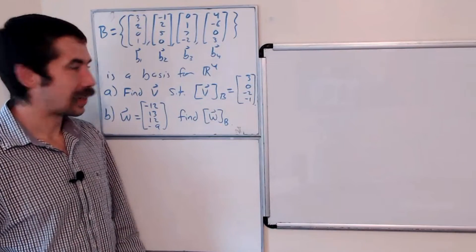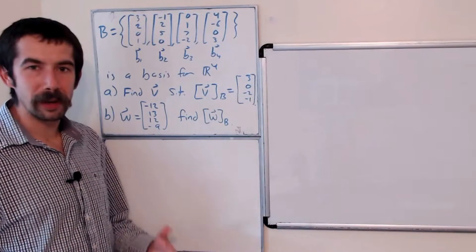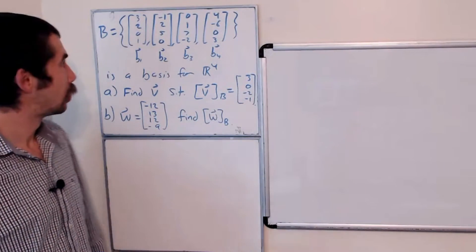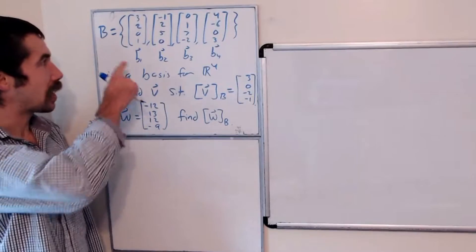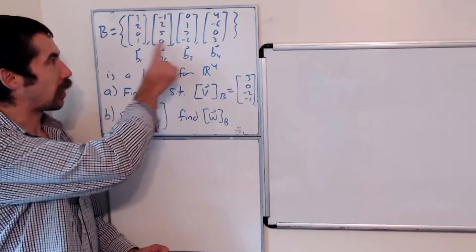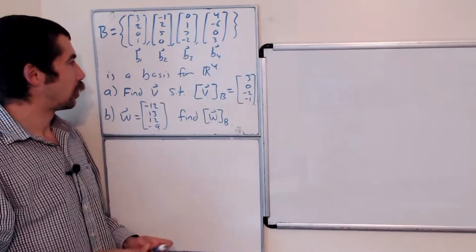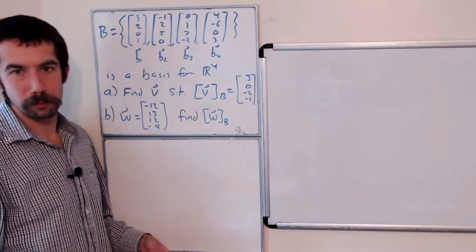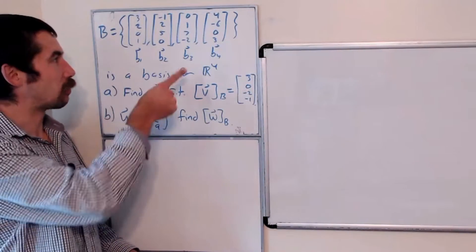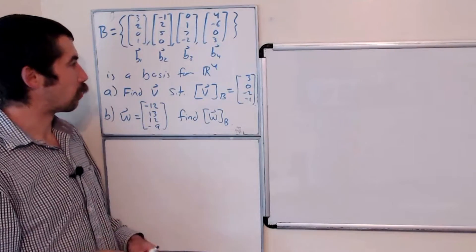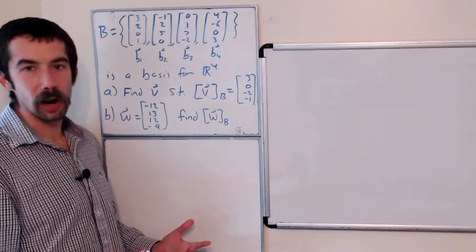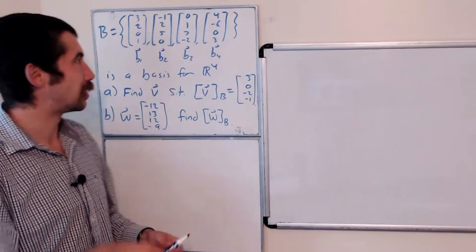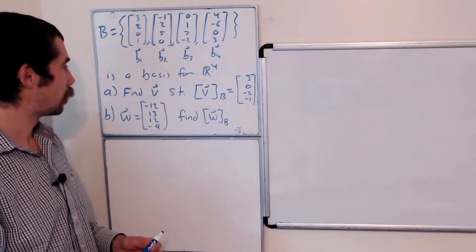Happy learning! Today we have a question about B coordinates. Let B be these four vectors, and you could show pretty easily that these four vectors form a basis for R4 — you could show that by showing they're linearly independent, since there's four of them.